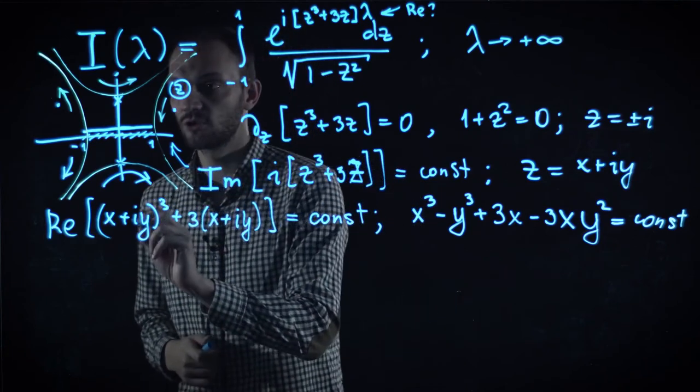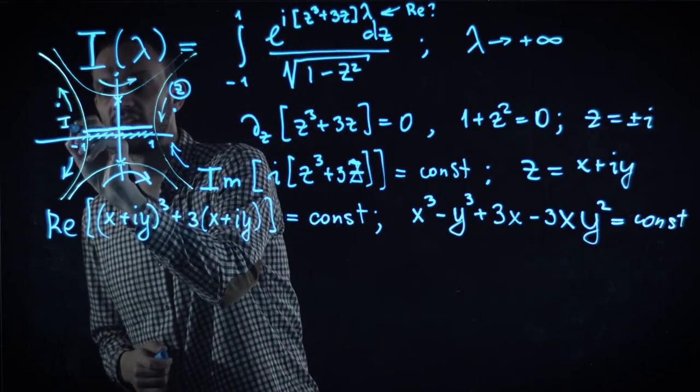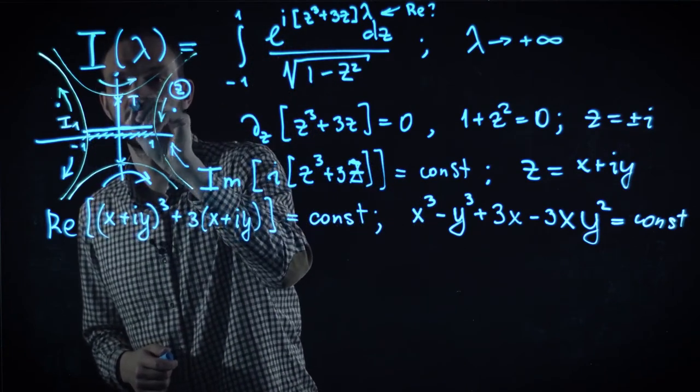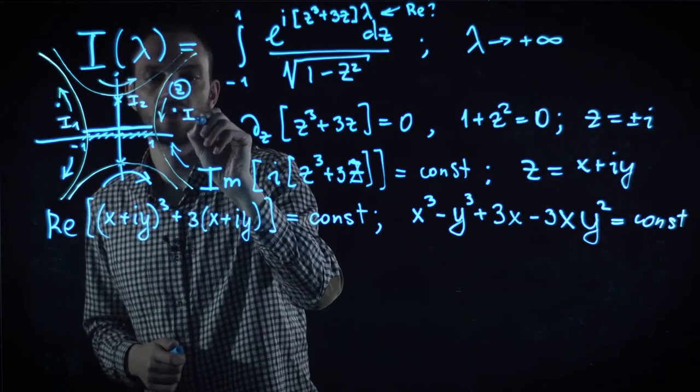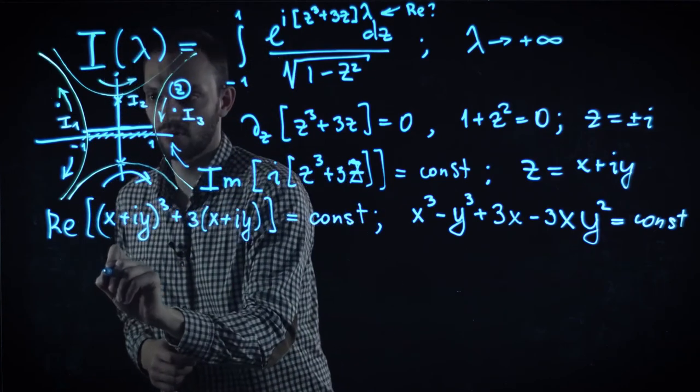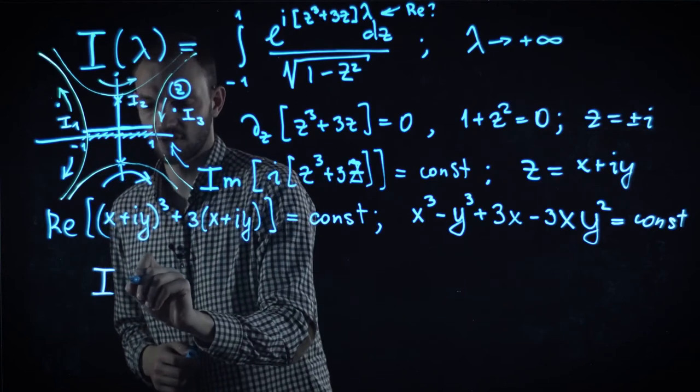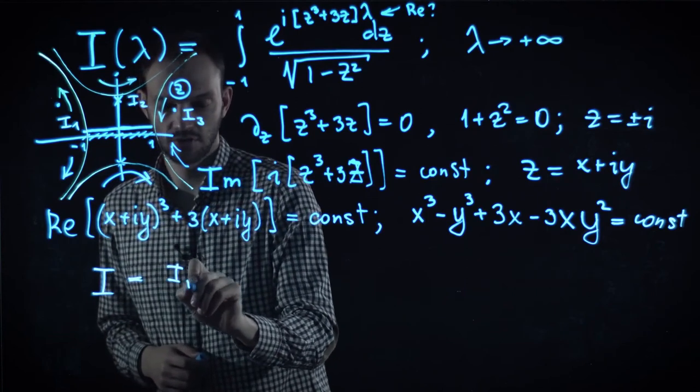But now, we still have to estimate these integrals one by one. And let us call this integral i1, i2, and i3. And in principle, our original function I is now decomposed into three contributions.